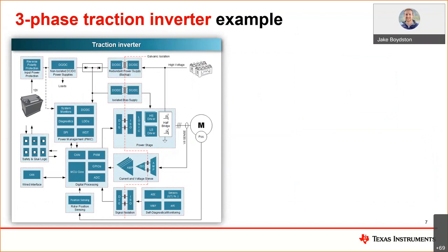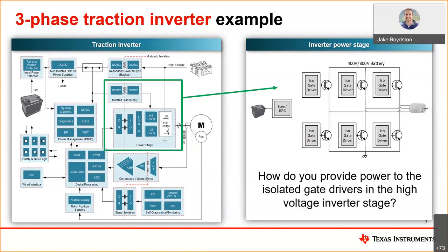To make sense of how these product types trade off, I'll start with an application example of an automotive traction inverter with a high voltage electric battery, typically 400 or 800 volts. Specifically, let's focus on the bias supply portion of the inverter, and let's assume the total load required is less than 10 watts. The power stage requires galvanically isolated gate drivers in a three-phase fashion in order to turn the electric motor and provide enough power to the car. So how should we provide the power to the gate drivers on the high voltage side?